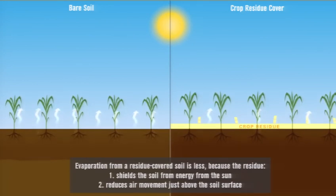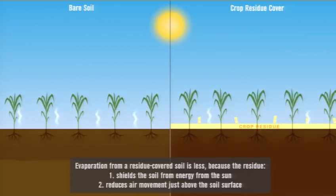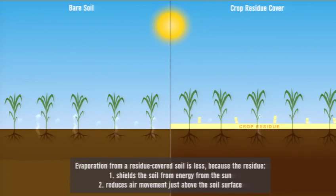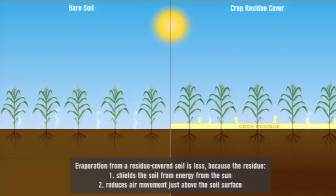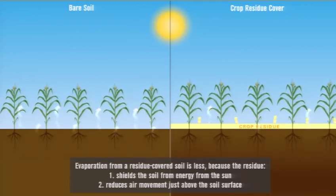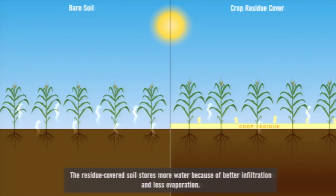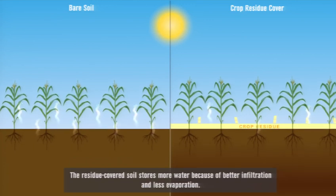Evaporation from a residue-covered soil is less than evaporation from a bare soil because the residue shields the soil from energy from the sun and reduces air movement just above the soil surface.